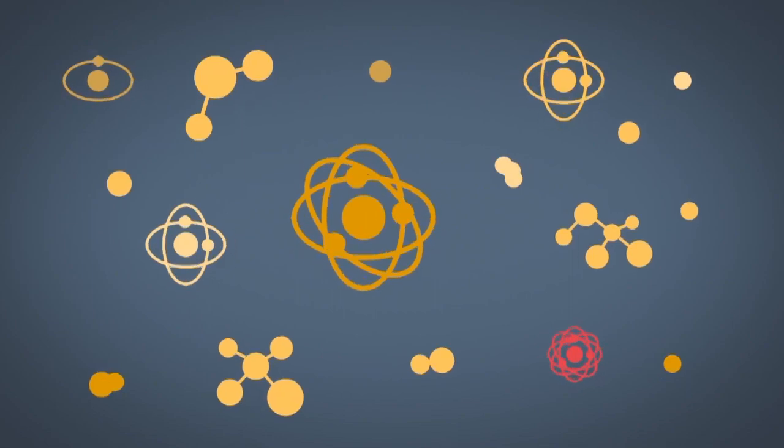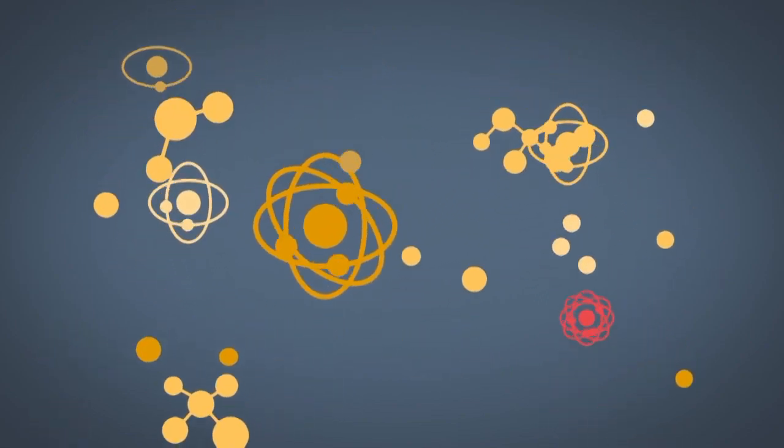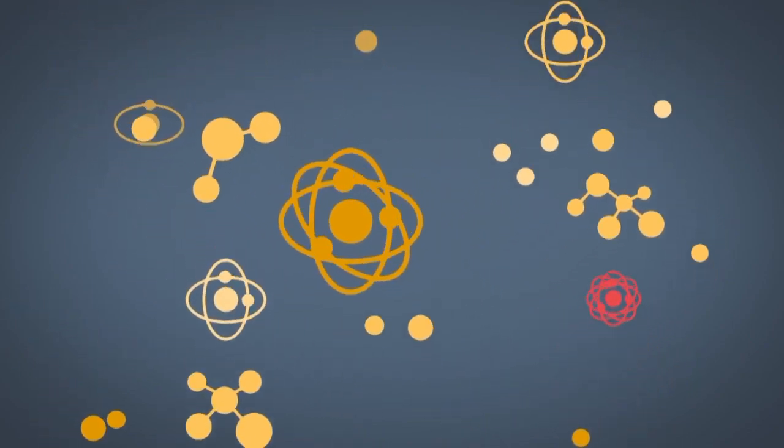As far as we can tell in the subatomic world, everything is just so ridiculously and frustratingly random. You look at an electron, and sometimes you look at it and it'll have a spin pointing up, and the next time you look at it it'll have a spin pointing down. Can't you just pick one? Why do you have to be both? Why do you have to keep flipping back and forth?